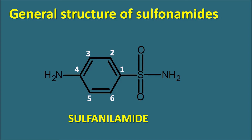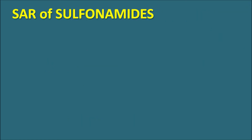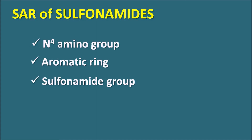The two nitrogens can be differentiated by how they are connected to the phenyl ring. The amine nitrogen is attached to the phenyl ring through the sulfonamide at position one, so it is called N1. The nitrogen attached as an anilino nitrogen at the fourth position is called N4. To discuss the SAR of sulfonamides in an easy way, we can divide it into four parts: N4 amino group, aromatic ring, sulfonamide group, and N1 amine nitrogen.